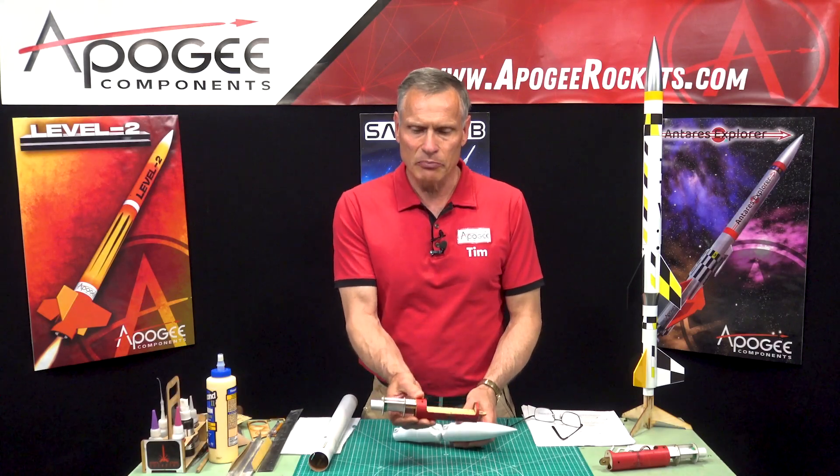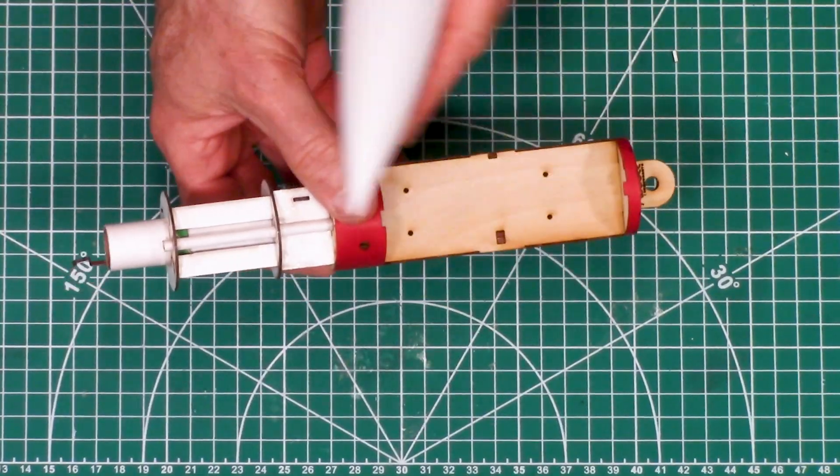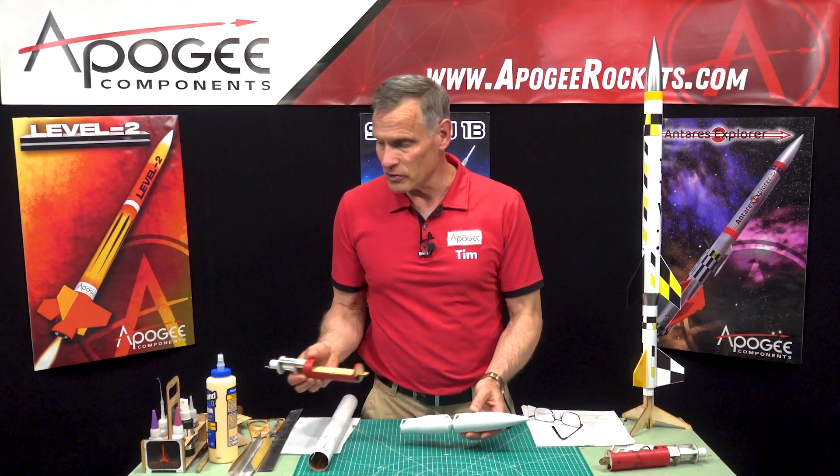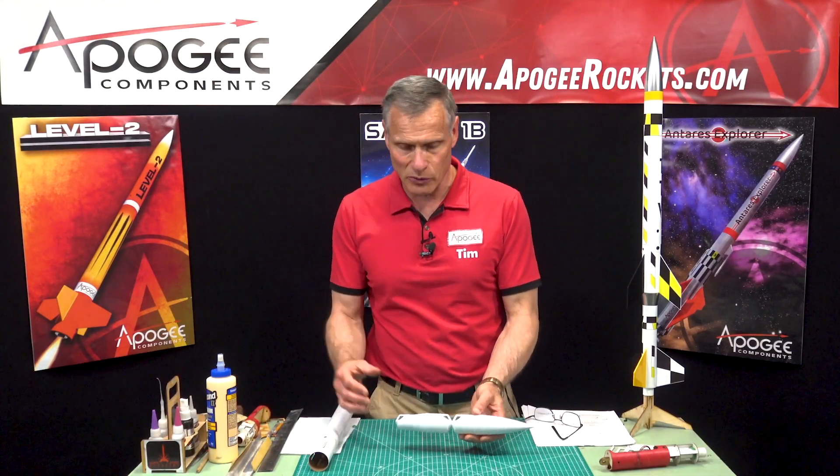In our last step we completed the assembly of the ebay and motor mount. So now we're going to start assembling the rest of the rocket.